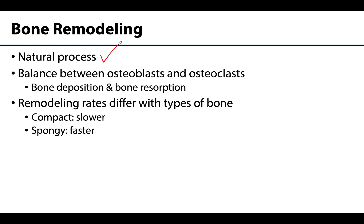Spongy bone is replaced considerably faster than compact bone — it takes quite a while to fully replace compact bone in certain areas. In our next video, we will discuss aging in bone and osteoporosis, which typically occurs when osteoblasts and osteoclasts are not working in unison, or certain ones are working slower than needed.